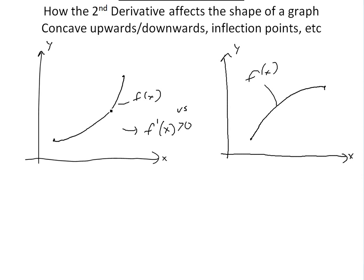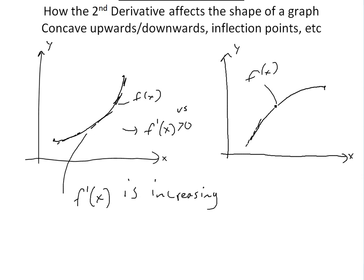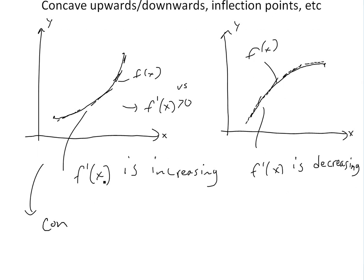If we look at the slope — the tangent line — on the first function, it keeps increasing, getting almost vertical. So we can say f prime of x is increasing on that one. But on the second function, if you draw the slope, you can see it's decreasing every time, becoming more horizontal. So f prime of x is decreasing on that one. From the shape of the first one, it's concaving upwards — that's whenever the derivative is increasing.